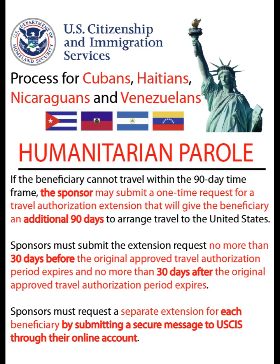If the beneficiary cannot travel within the 90-day time frame, the sponsor may submit a one-time request for a travel authorization extension that will give the beneficiary an additional 90 days to arrange travel to the United States. Sponsors must submit the extension request no more than 30 days before, and no more than 30 days after, the original approved travel authorization period expires. Sponsors must request a separate extension for each beneficiary by submitting a secure message to USCIS through their online account.